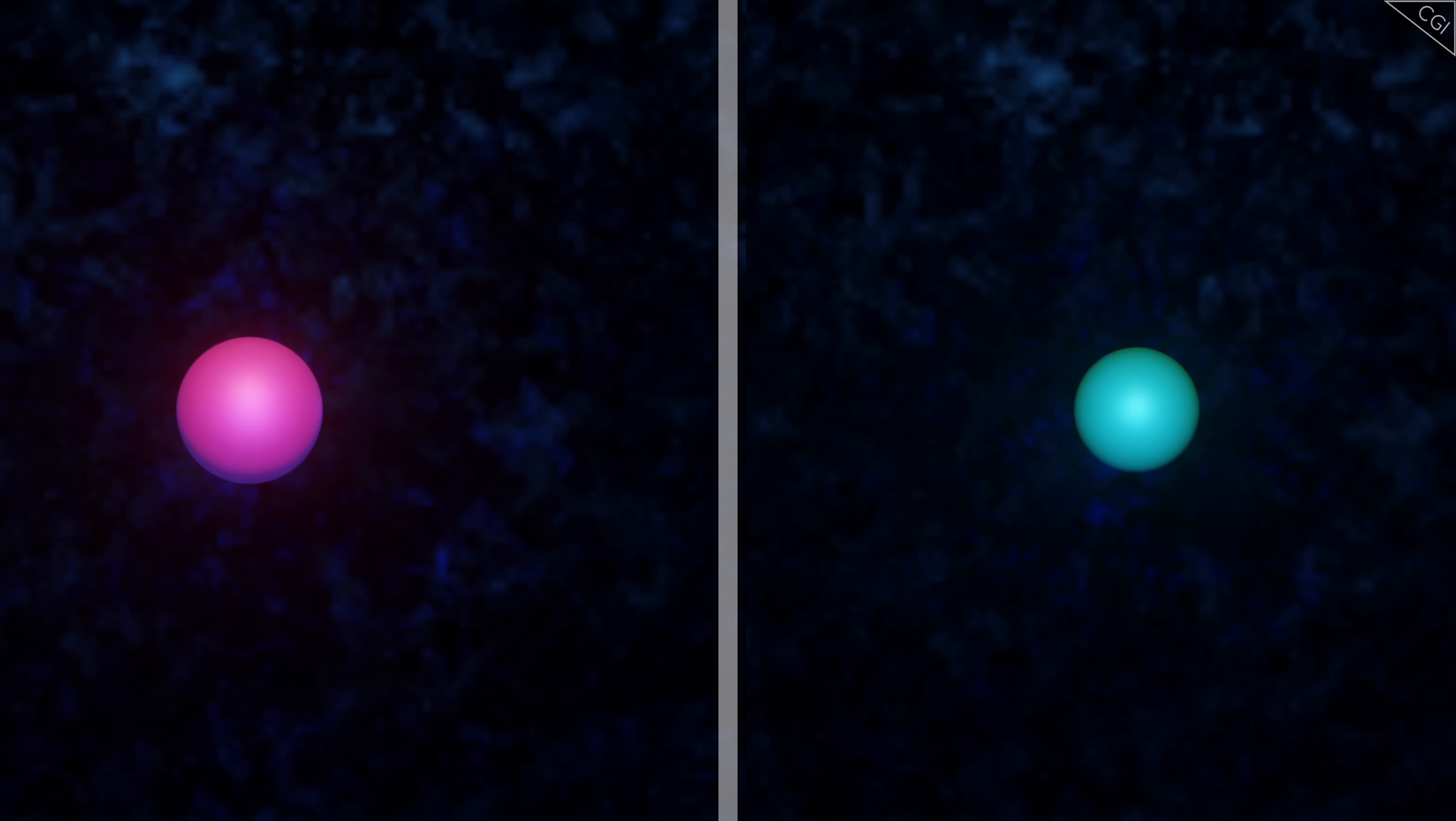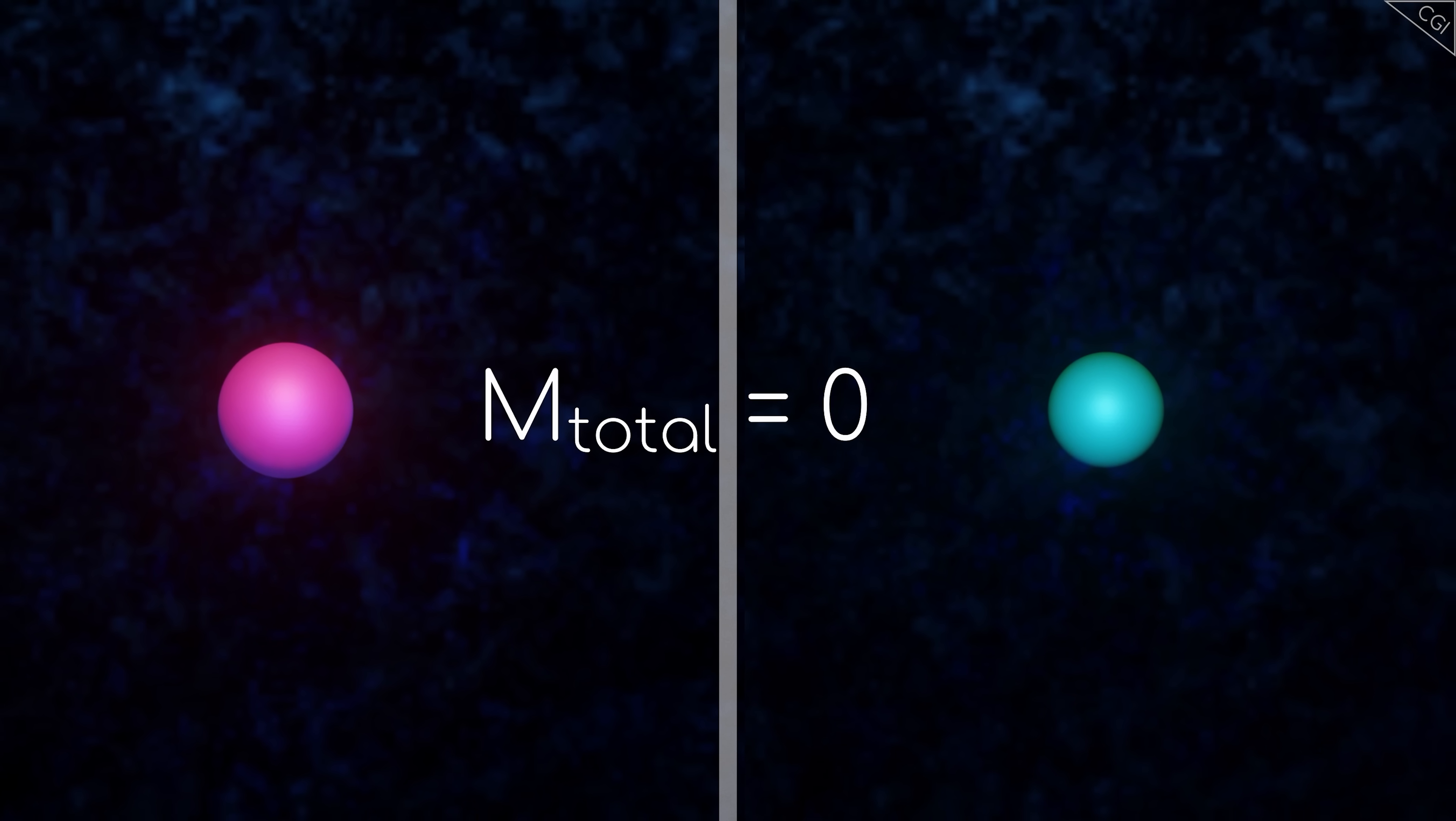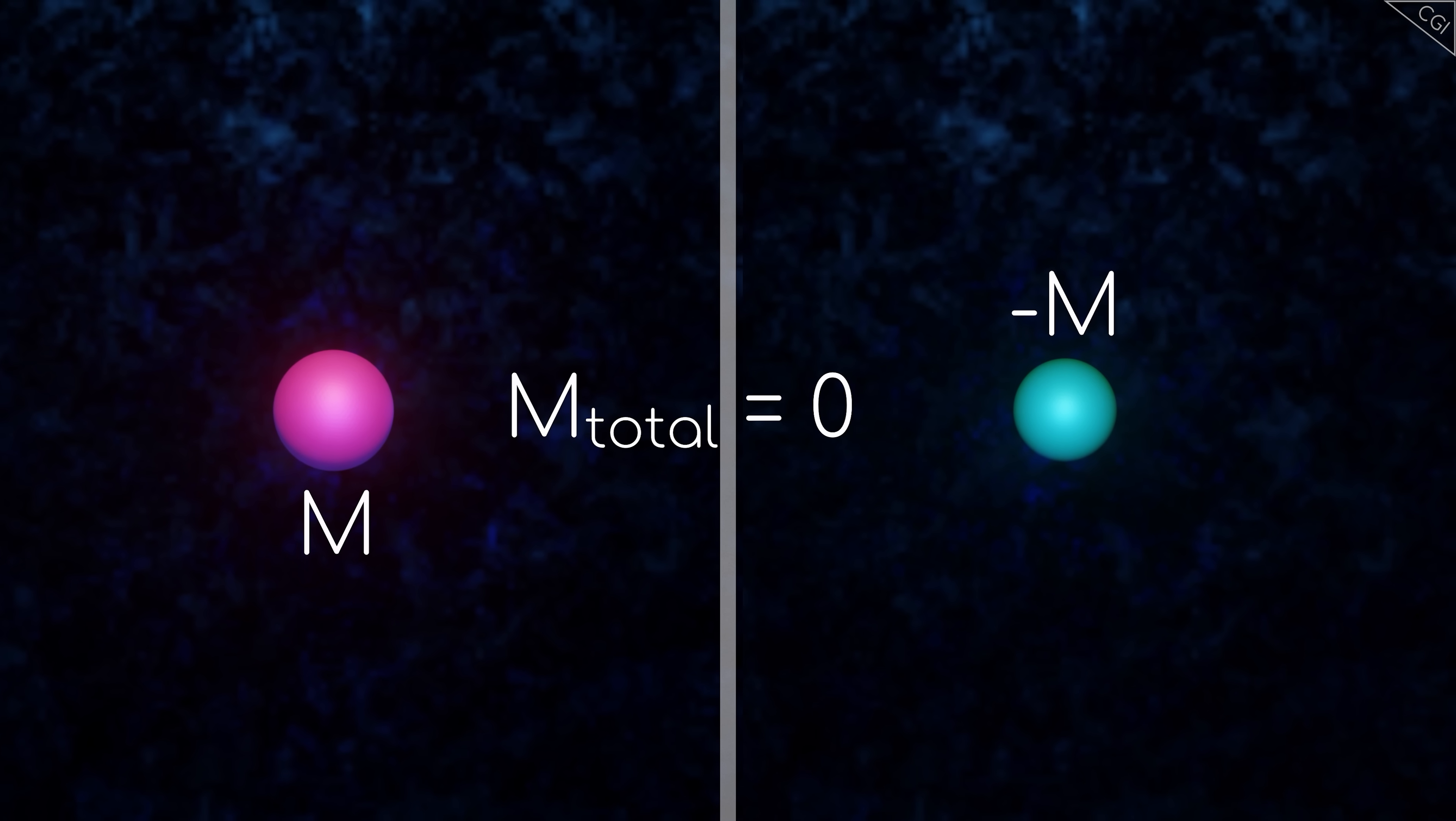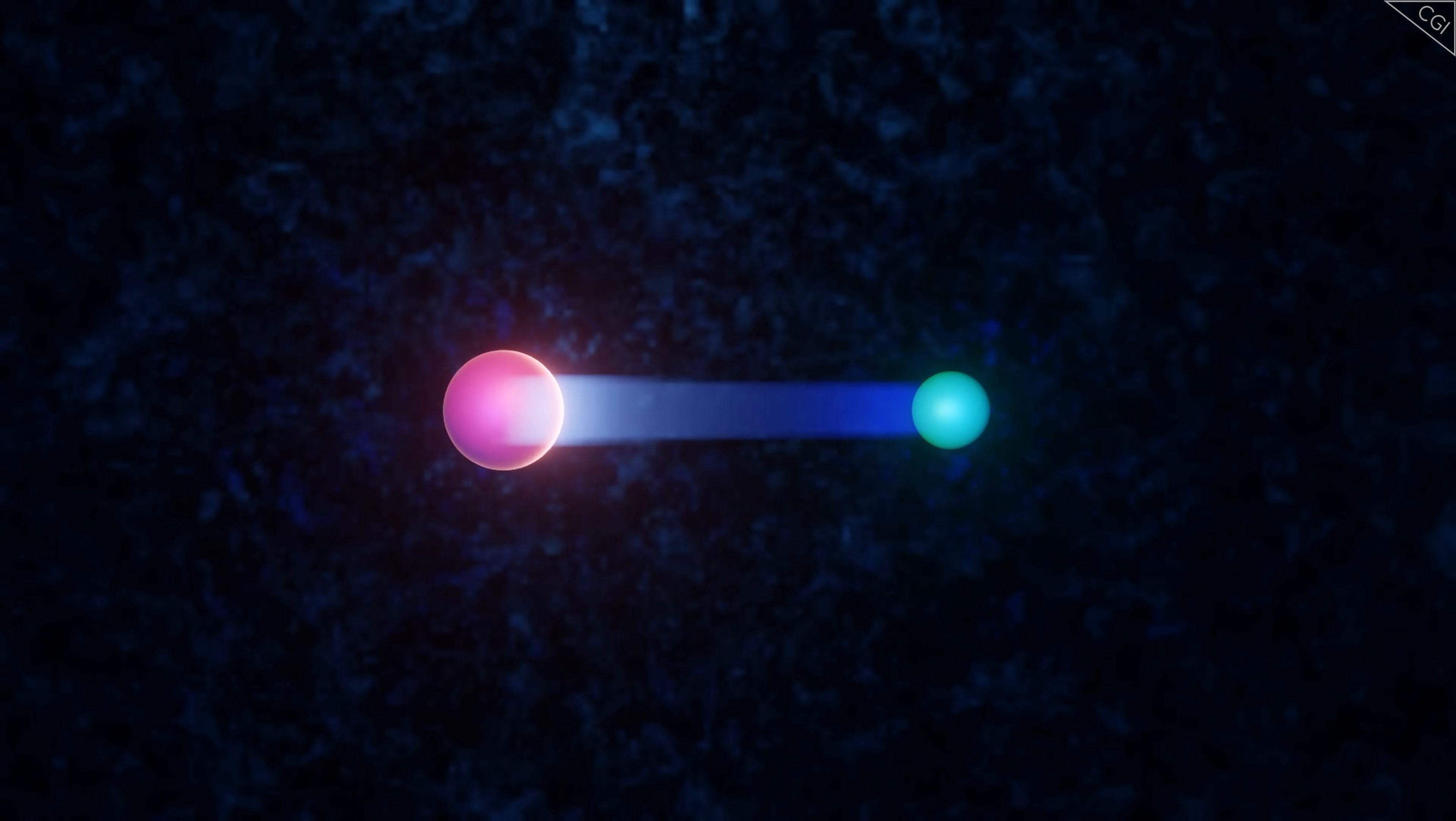For instance, if you know that the particles originally had a total of zero momentum, and you learn the momentum of one of the newly quantum entangled particles, you know the momentum of the other particle will be the exact reverse, making sure the total remains zero. Effectively, by measuring the one particle, you can learn things about the other.